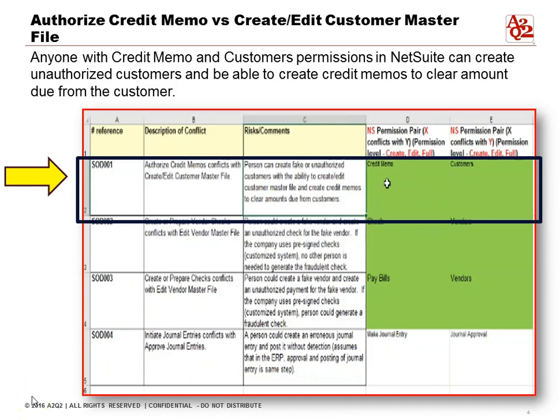We don't want anyone who has the credit memo permission to also have create, edit, or full customers permissions. In this example, we've laid out a grid so that you can see credit memo in column D and customers permission in column E, so that you can compare the two.